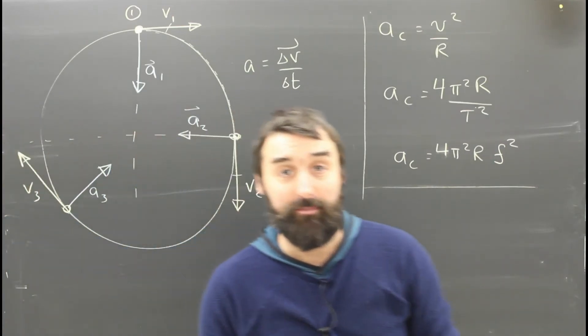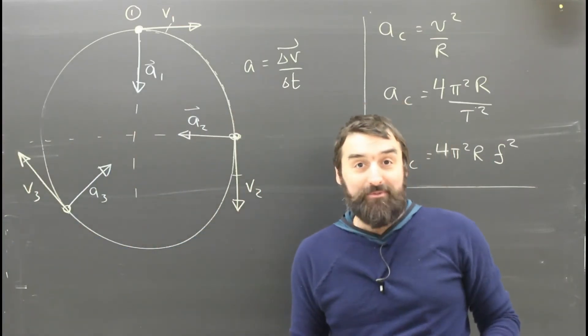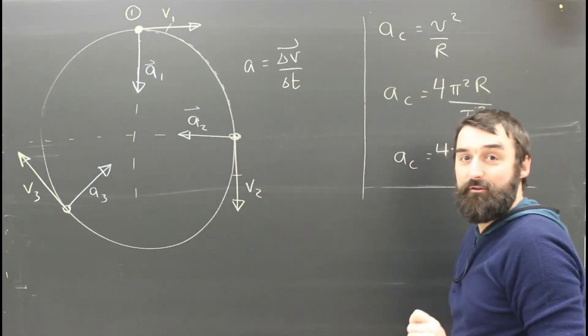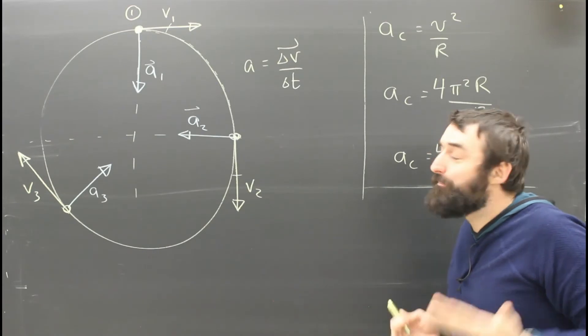So, hopefully that makes a little bit of sense. Objects going in a circle are for sure accelerating. That acceleration is directed towards the center of the circle. And how do you calculate how big it is?